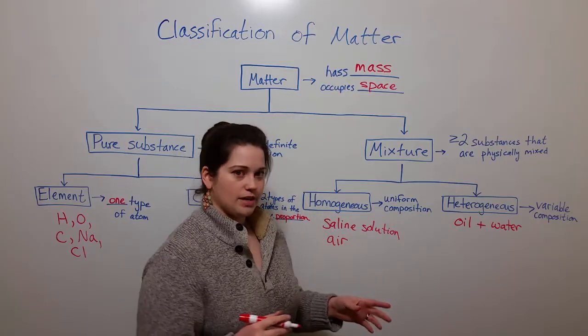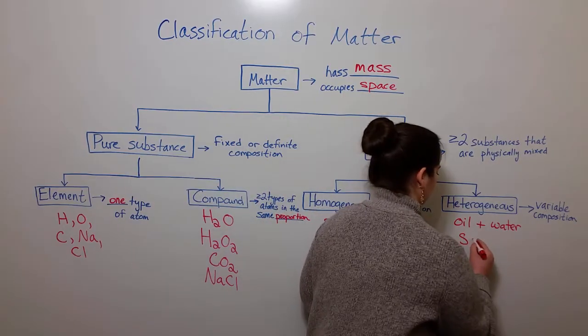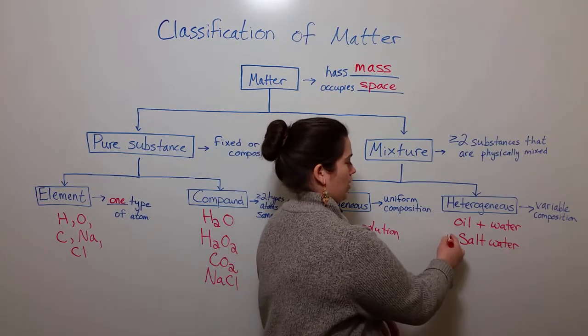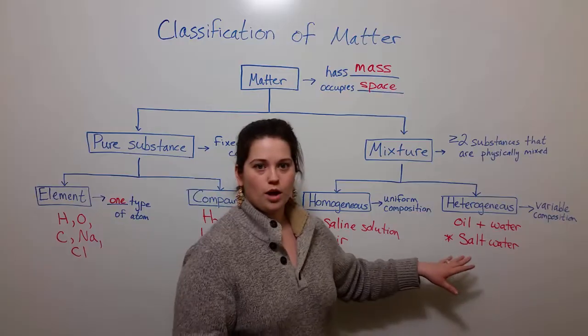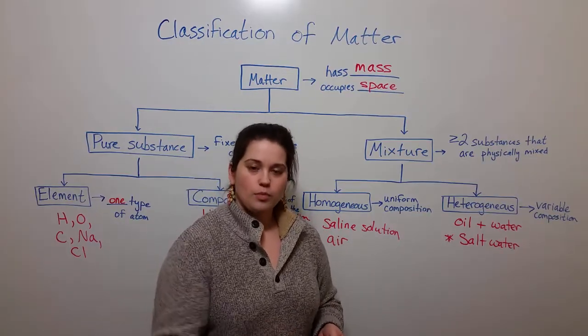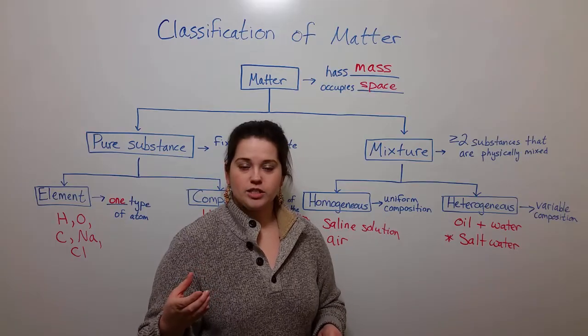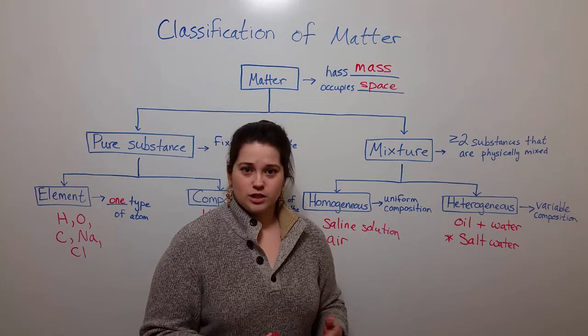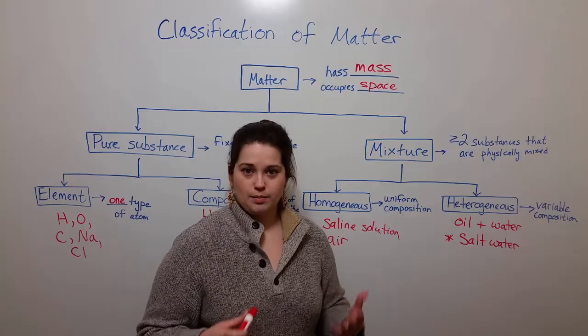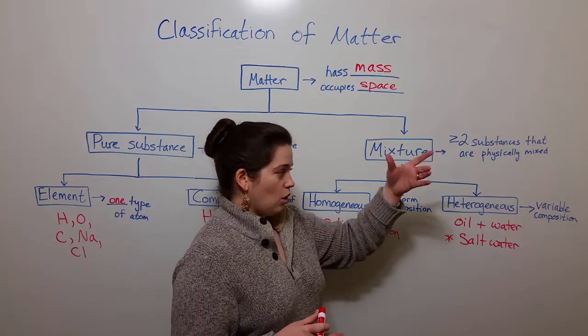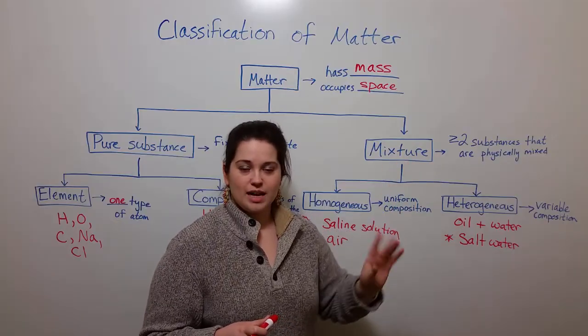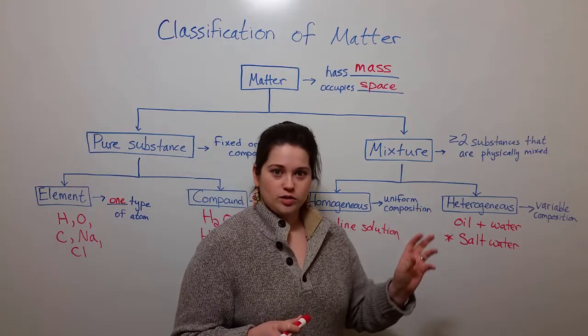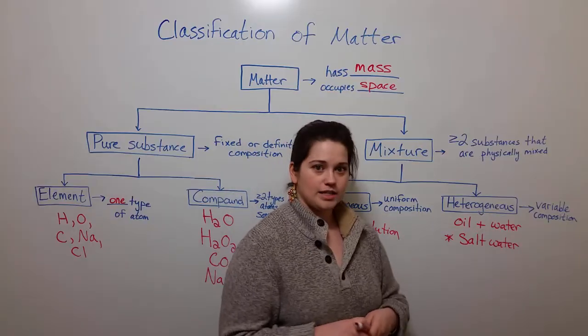Another example of a heterogeneous mixture is salt water. So for example, here when I say salt water, I'm talking about like sea water, so water in the ocean. If you take a cup full of water from the ocean, from the beach, it's going to contain water, it's going to contain sand, it's going to contain different kinds of salt, different kinds of debris, broken up shells, etc. And you can hold it up to the light and see all of the particulate matter mixed in with the water. And so being able to see all of those particulates in the ocean water is what makes it a heterogeneous mixture.